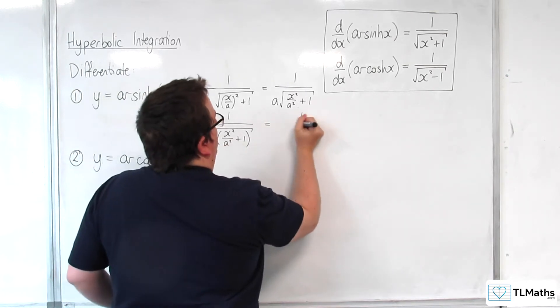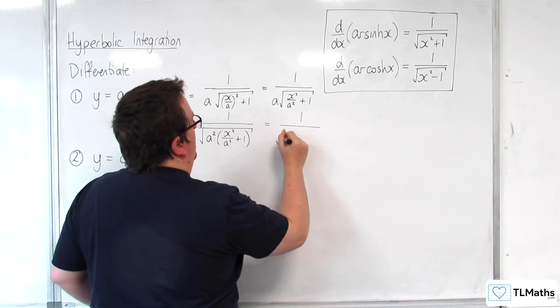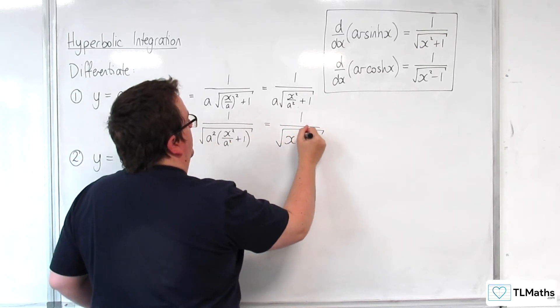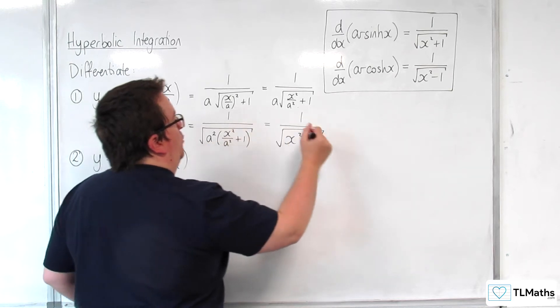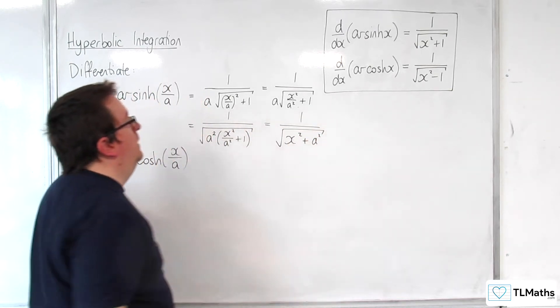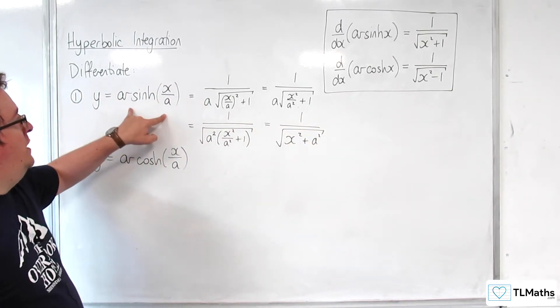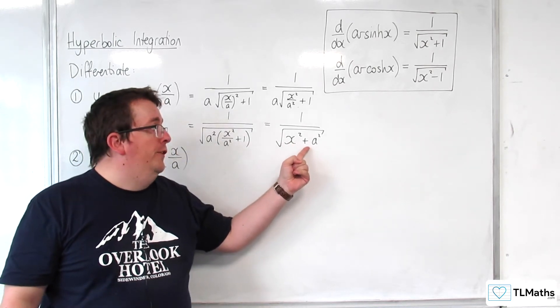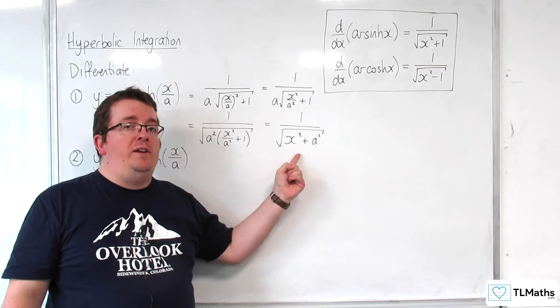And so we have 1 over the square root of a squared times this is x squared plus a squared times 1. So arcsinh of x over a differentiates to 1 over the square root of x squared plus a squared.